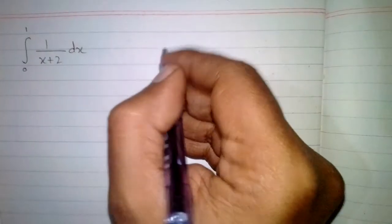In this video we are going to integrate a definite integral. We have to integrate 1 upon x plus 2 from 0 to 1, where 0 is the lower limit and 1 is the upper limit.